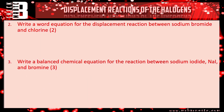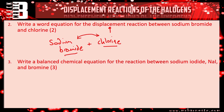Moving on to the word equation: starting with sodium bromide reacting with chlorine. Working out which is more reactive — chlorine is higher up the periodic table, therefore it's the most reactive and will displace bromine. So the products are sodium chloride plus bromine. You get one mark for the left-hand side and one mark for the right-hand side.